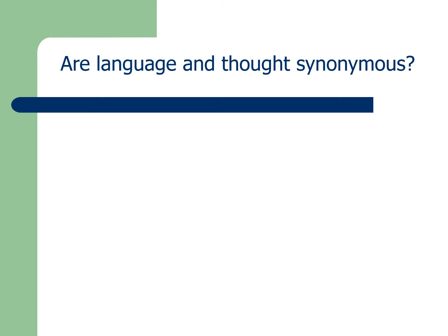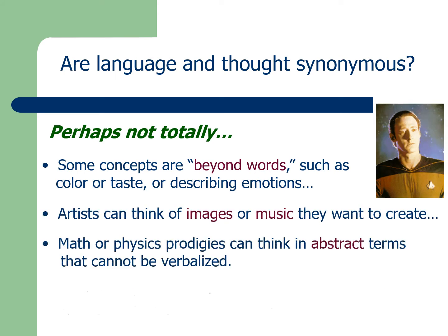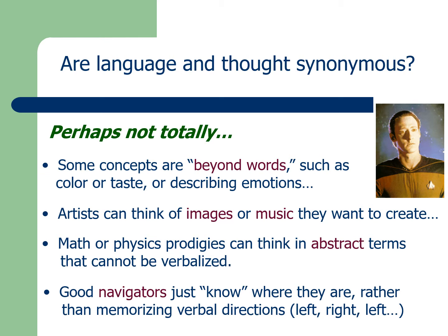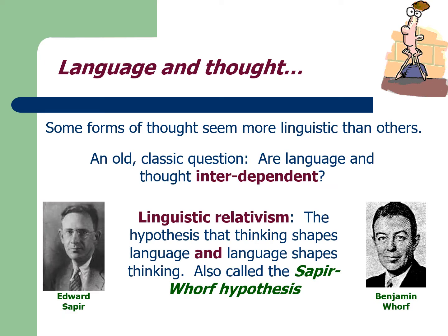So are language and thought synonymous — is one just like the other? Probably not. There are some things we think about that you really can't put into words. For example, if I ask you to describe your mother's face, it's very difficult because we normally don't think about it in words. Similarly, if I ask you to describe your favorite music, people will say things like 'it's mellow' or 'it's smooth,' but none of those descriptions really convey the music itself.